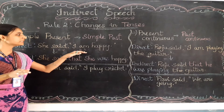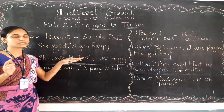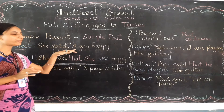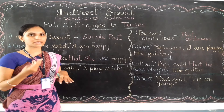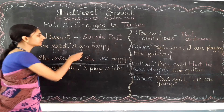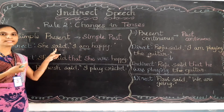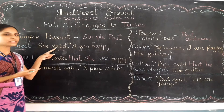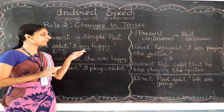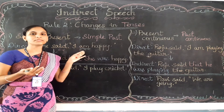After the subject 'I' we can find the verb 'am.' Am is a present tense verb. So here we are going to make the changes to the verb. The reported verb 'said' is already in the past, so we are not changing that. We are going to change this verb 'am' only. In place of 'am,' we are going to change it into the past verb.